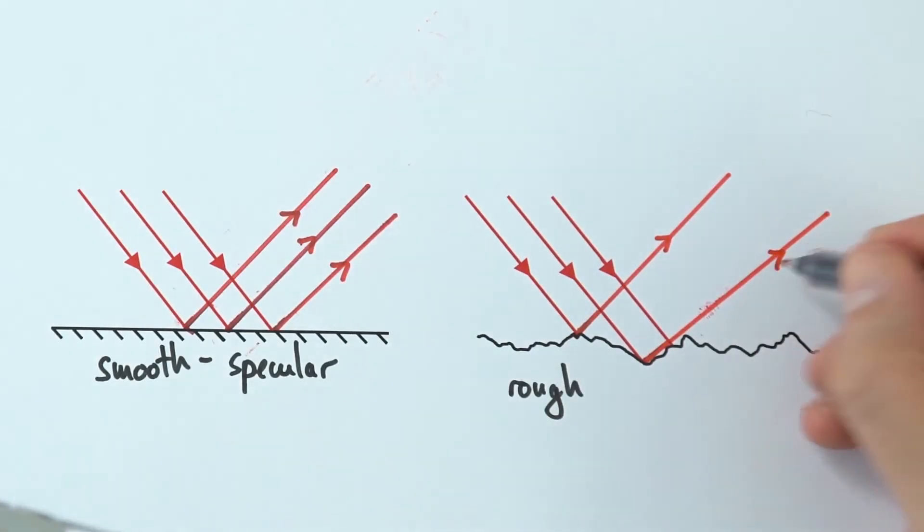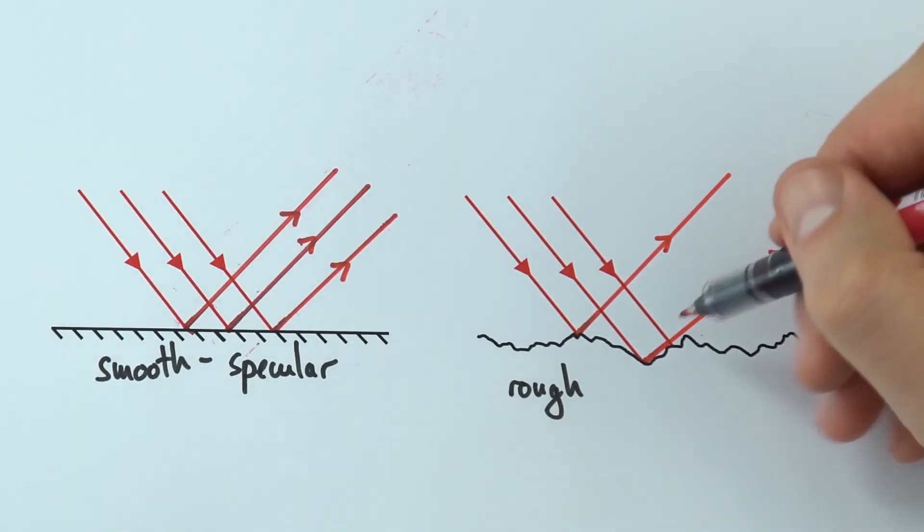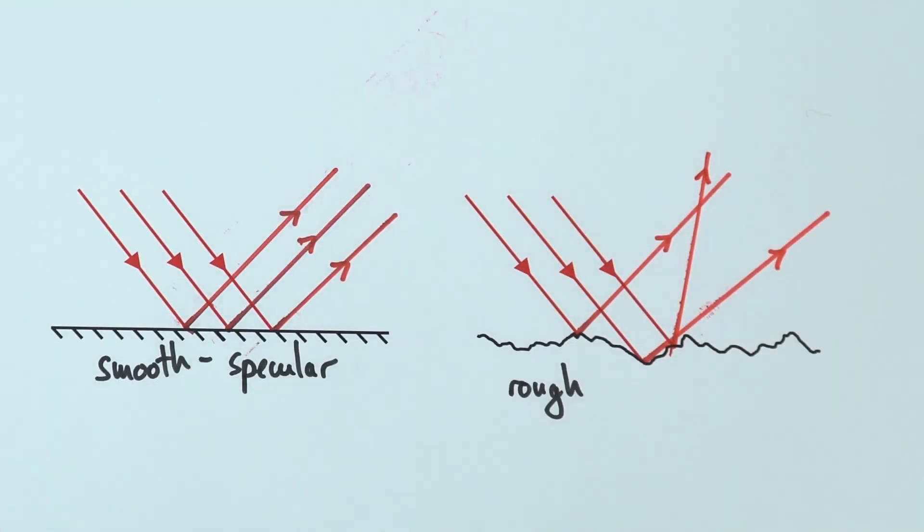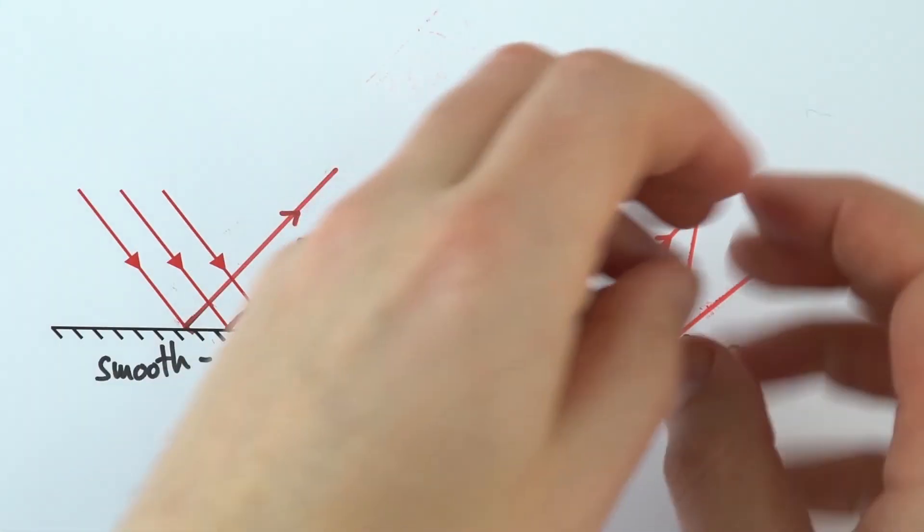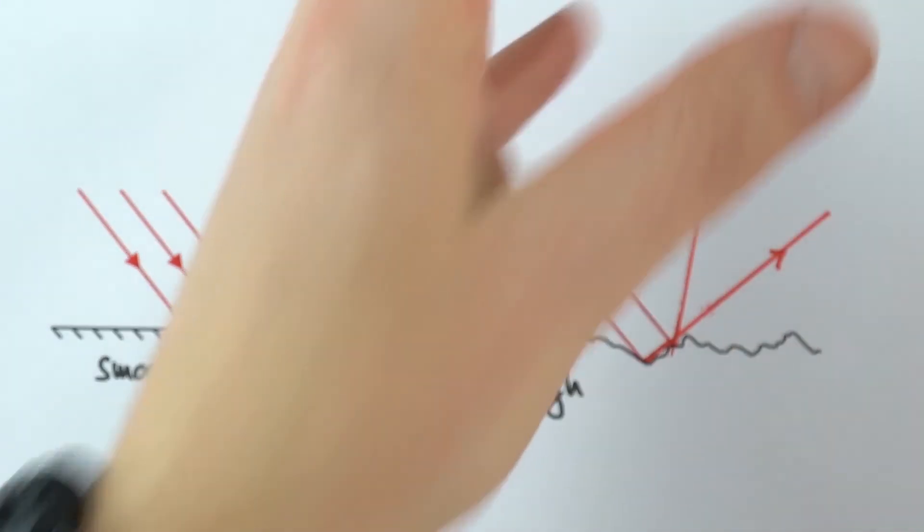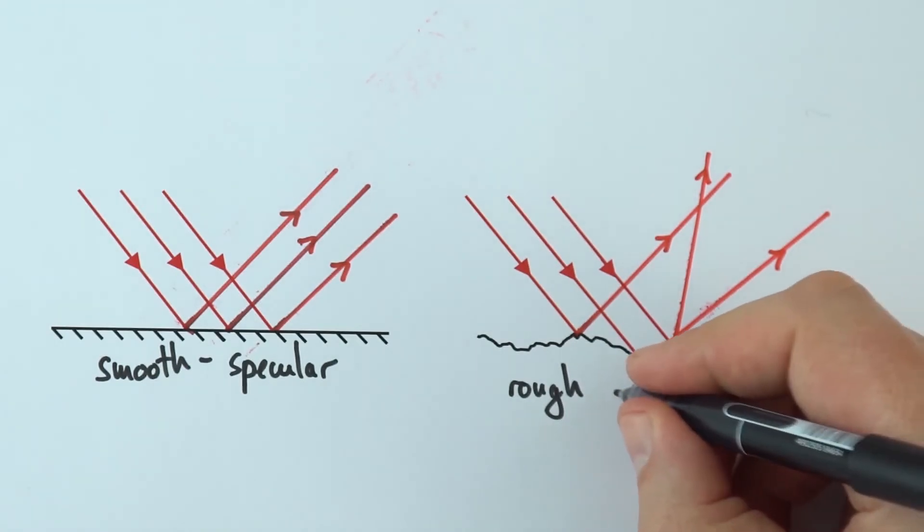This other ray of light might hit the surface and bounce off like this. What happens is this light, as it comes out, rather than going all off in the same direction, it kind of diffuses out. This is what we call a diffuse reflection.